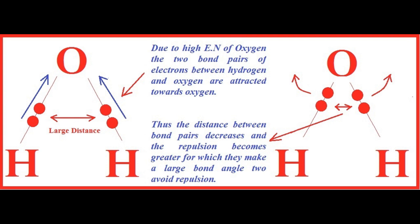You can see in the figure: in the first figure, the distance is large when we imagine the electron pairs are between oxygen and hydrogen. But when, due to high electronegativity, oxygen attracts the electron pair, the distance decreases — as shown in the second figure. Thus, due to high repulsion, the bond angle increases.